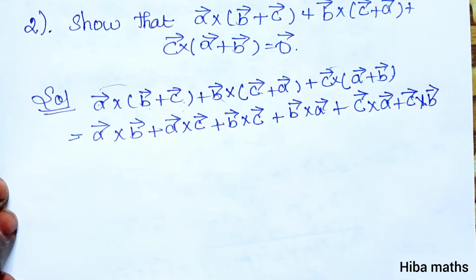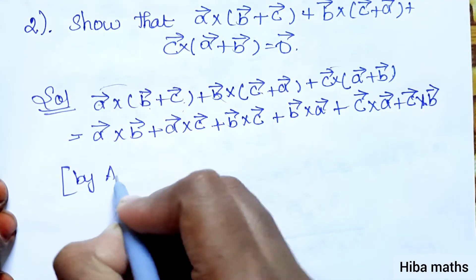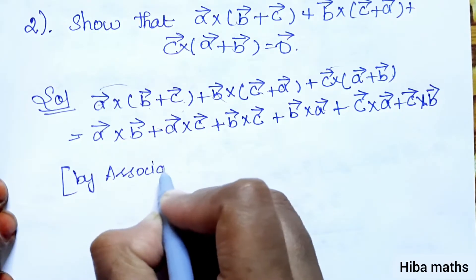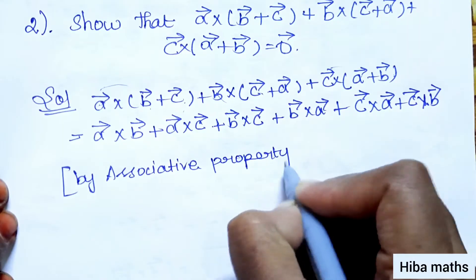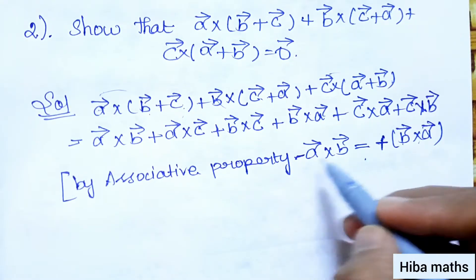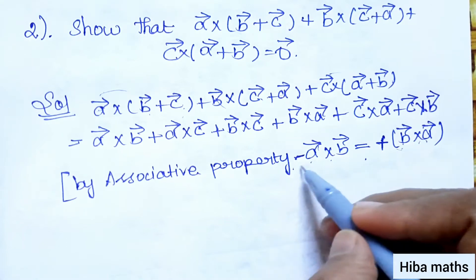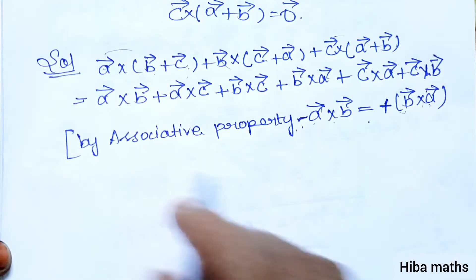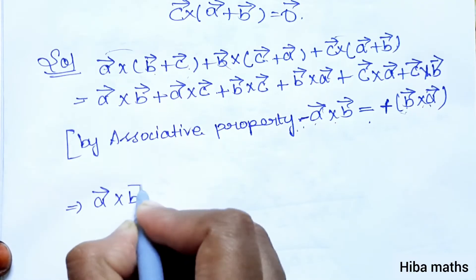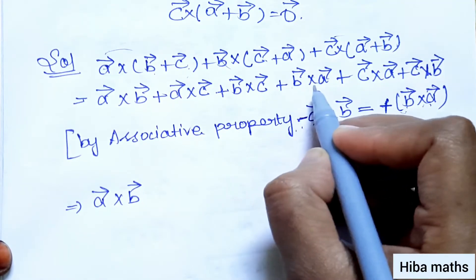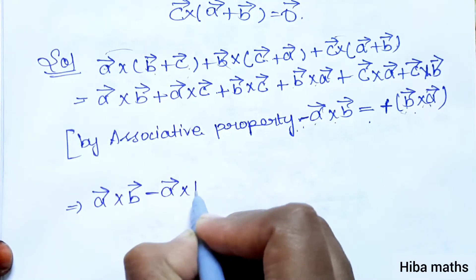By the anti-commutative property of vector cross product, b vector cross a vector is equal to minus of a vector cross b vector. Similarly, c vector cross b vector equals minus b vector cross c vector, and so on.